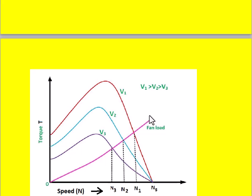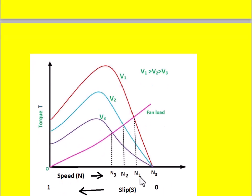Once torque changes, speed automatically changes, and once speed changes, slip also changes. This is the torque versus speed characteristic showing different voltages applied to the stator: V1, V2, and V3, where V1 is the highest voltage and V3 is the lowest.